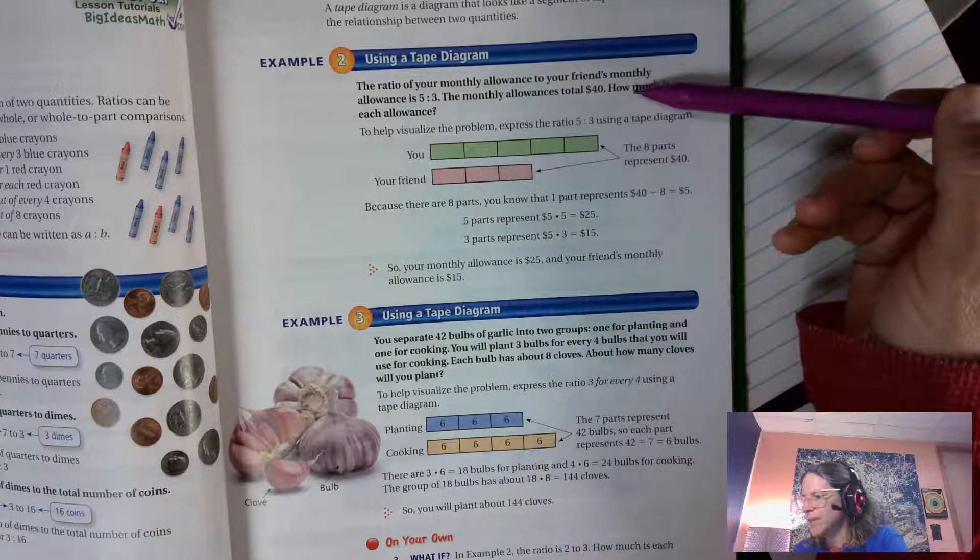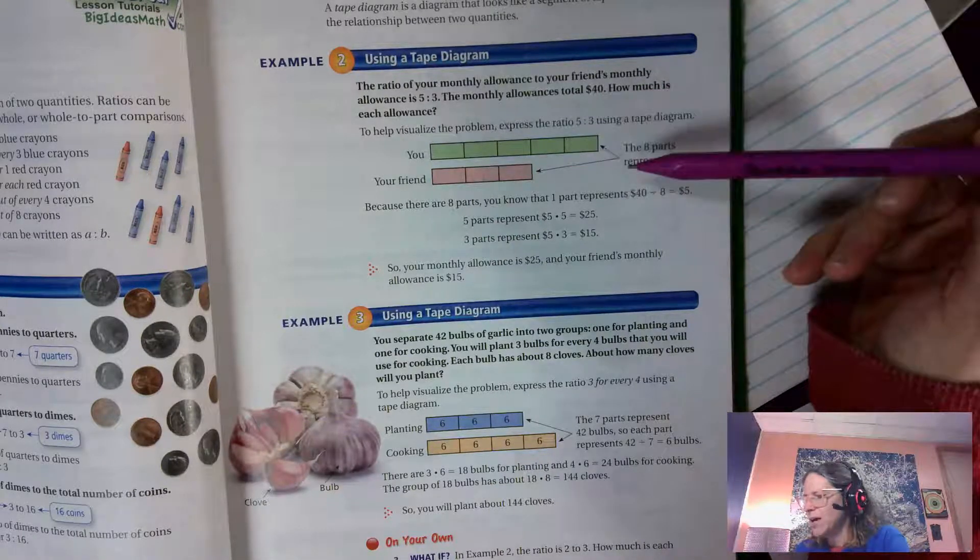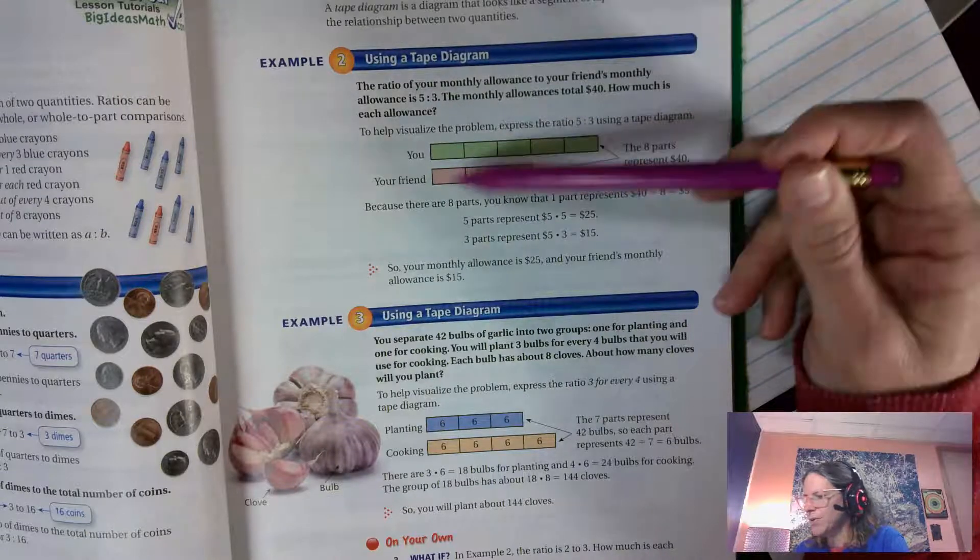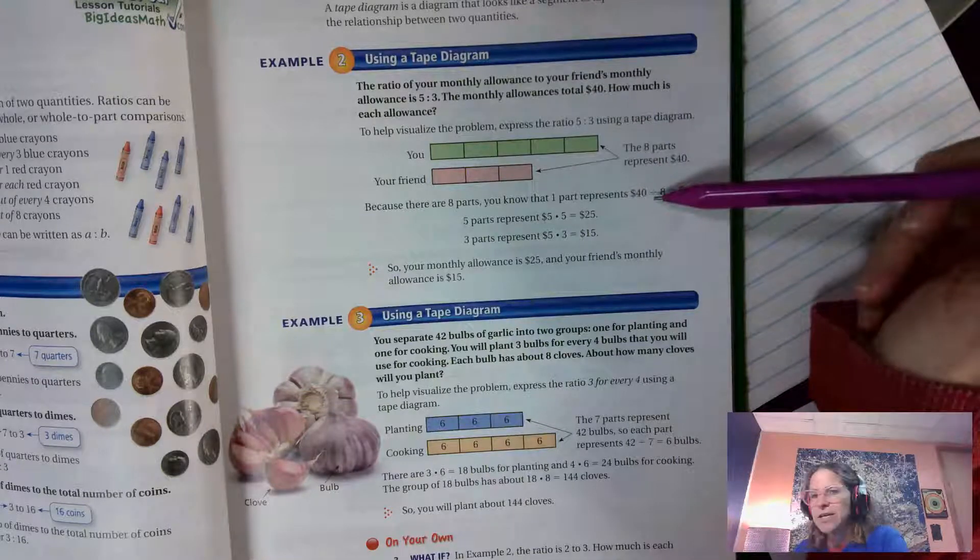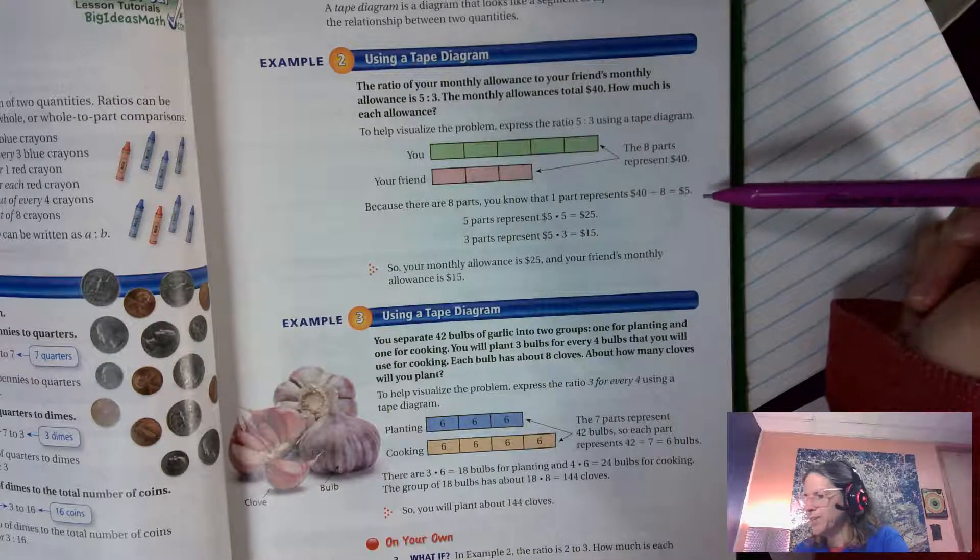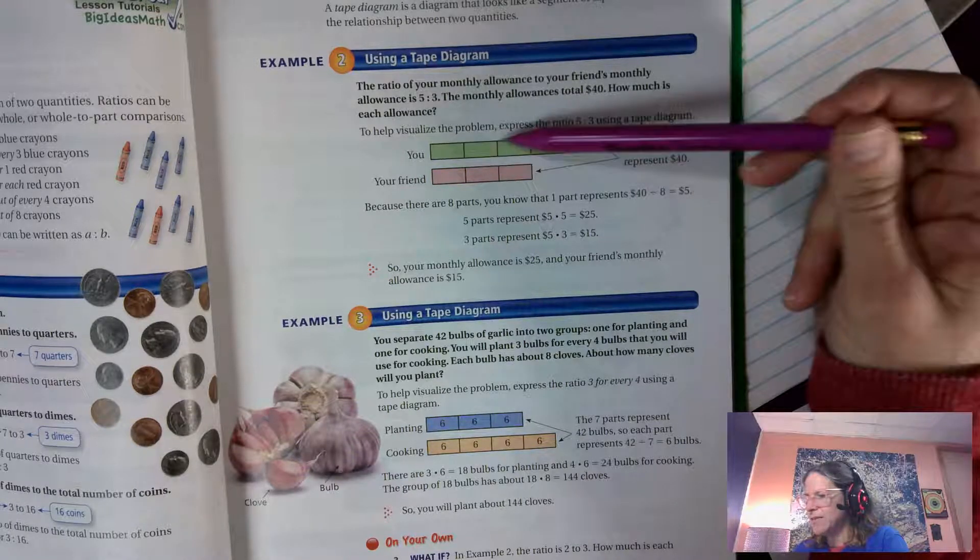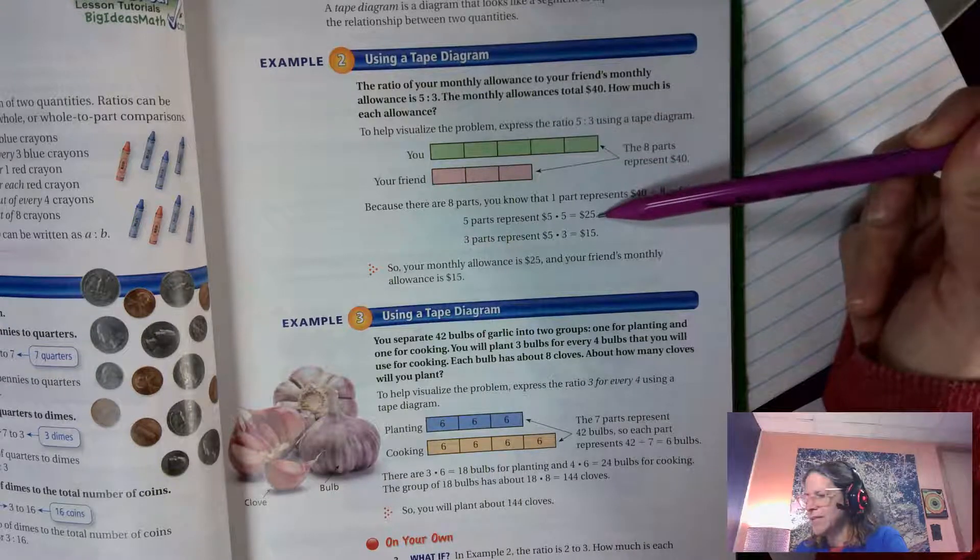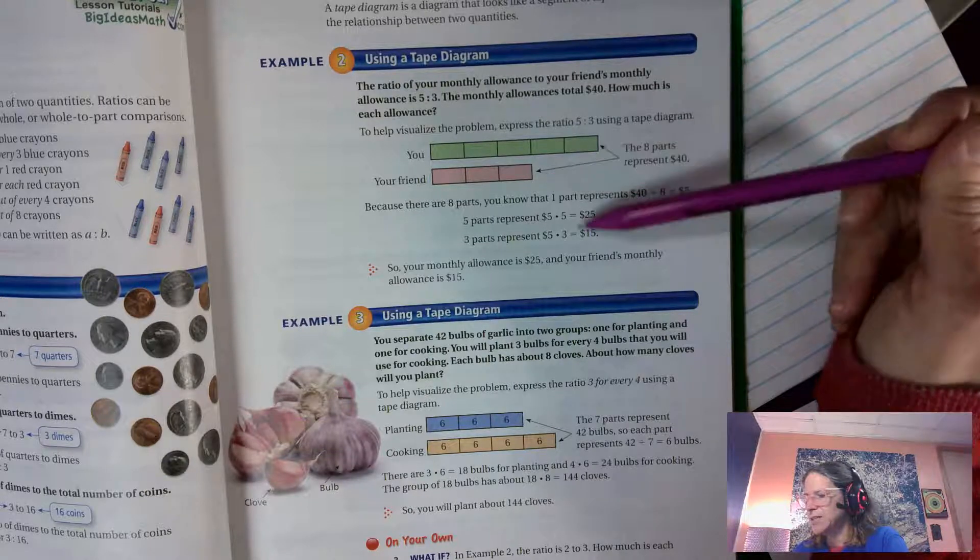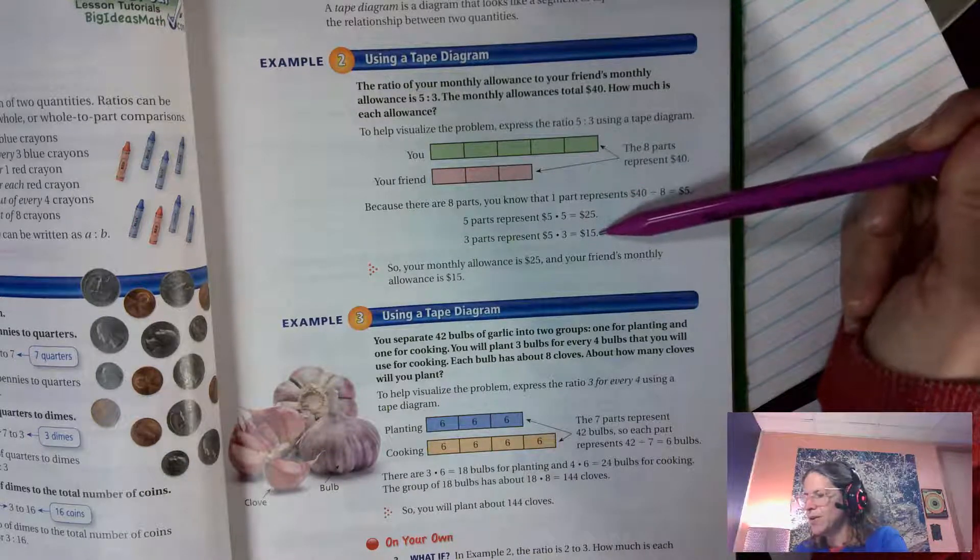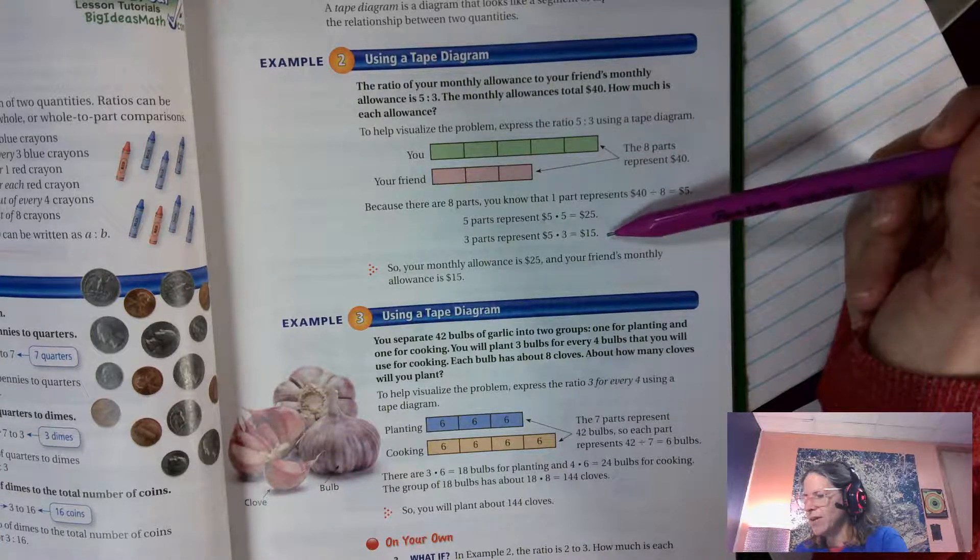The total monthly allowances are forty dollars. How much is each allowance? So I have my five parts for me and my three parts for my friend, eight total parts. So I took my forty dollars divided it into eight parts, each part is worth five dollars. So if this is worth five, ten, fifteen, twenty, twenty-five, I might take that five dollars multiply it by the five parts and I get twenty-five dollars. My friend's allowance is fifteen. I know the total allowance is forty dollars, so then I add fifteen and twenty-five, it's forty. I know that I'm right. That's how I can double check my math.